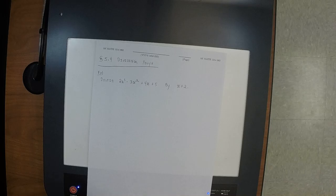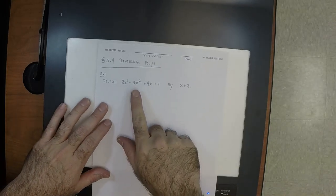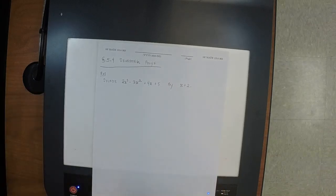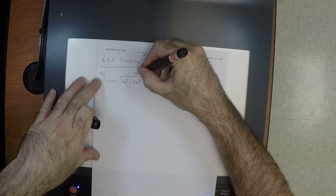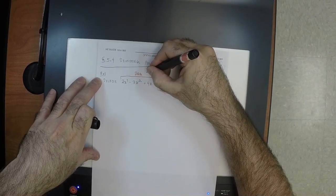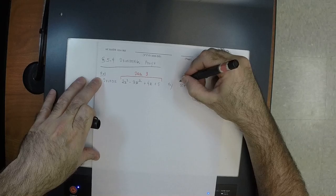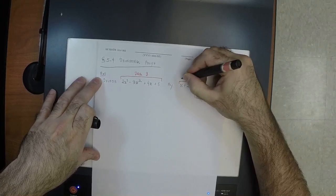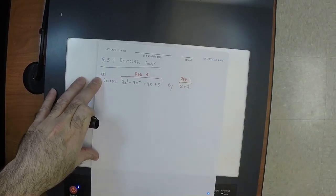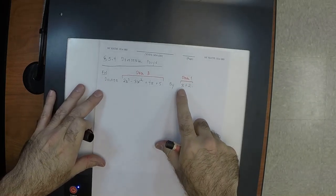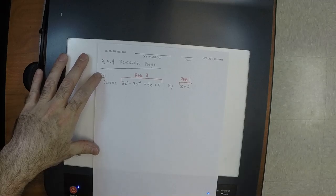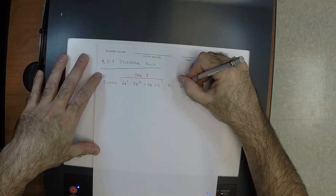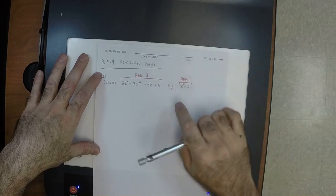When performing division you usually want to be dividing something big by something small. We have to reckon what 'big' and 'small' mean here. This polynomial is bigger in the sense that its degree is 3, and the degree of the divisor x + 2 is 1.